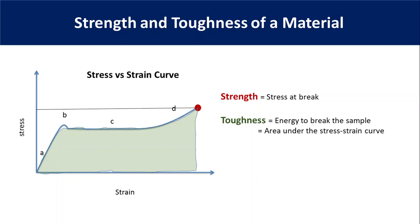Strength is important when we do not want a material to fail. But toughness is important when we would like material to fail at a specific incident, like a car accident. During an accident, we want car parts to absorb the most amount of energy so that people feel less force. Therefore, toughness is more important for car body parts than strength. But for chairs and other household goods, we would like them to be more strong rather than tough.